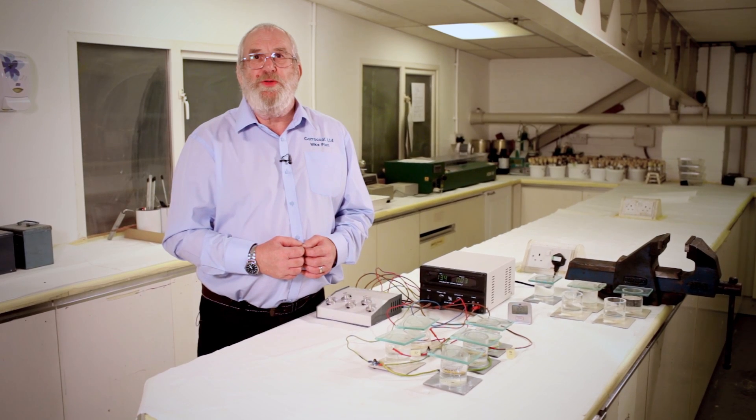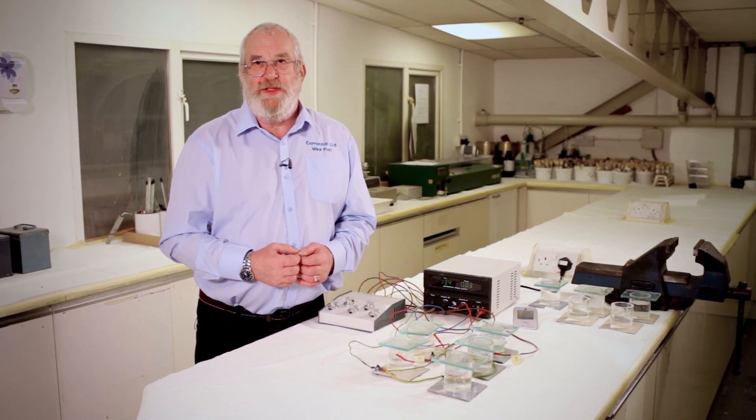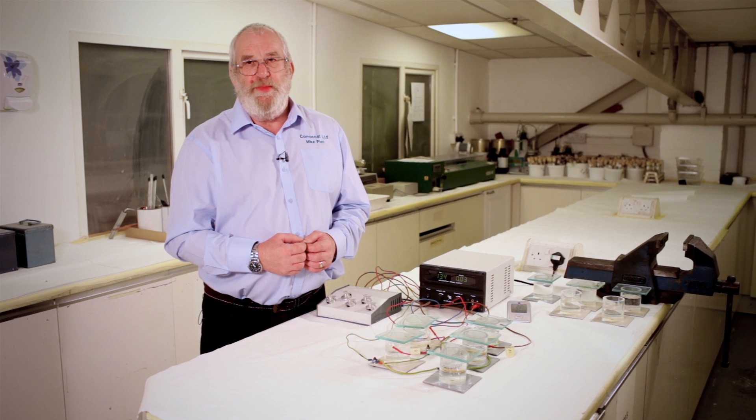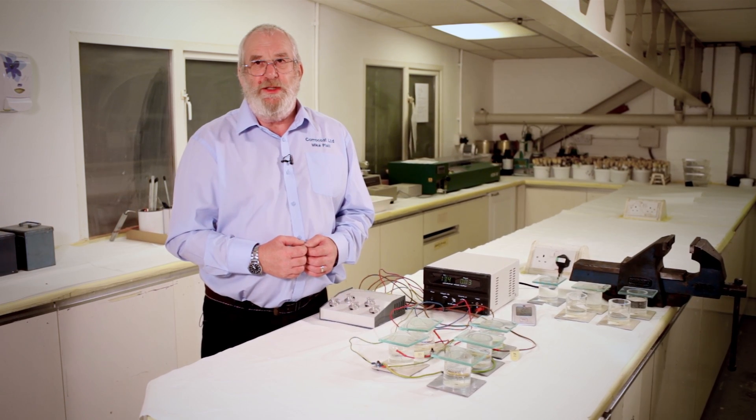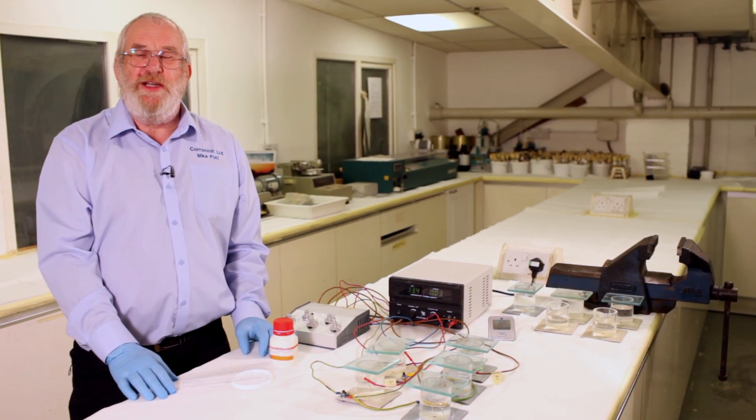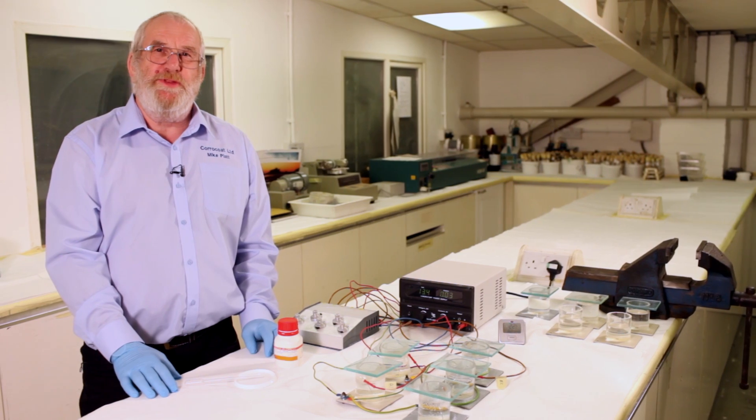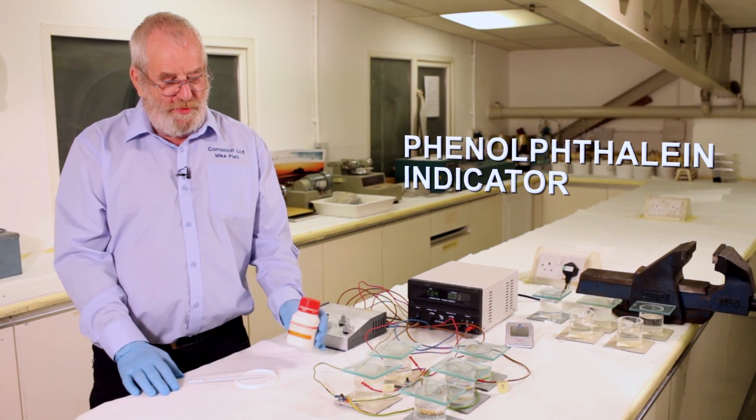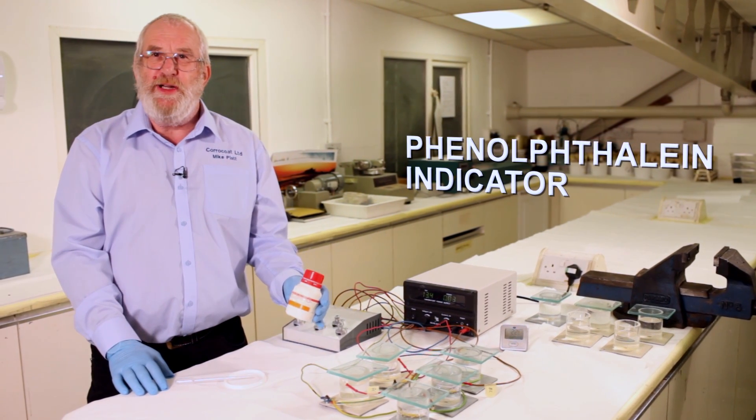There are some issues in assessing the end results. Whether the coating is a thick or thin film, elastomeric, rigid or brittle, the exact area of disbondment can be difficult to measure. To assess the area of disbondment, it is preferable to use a marker. The one we use at Coracoat is phenolphthalein.